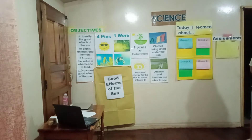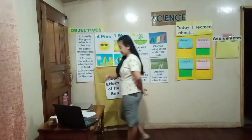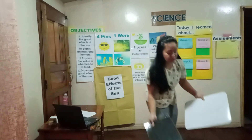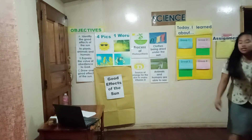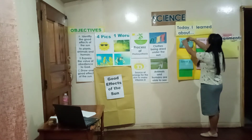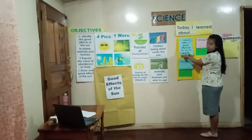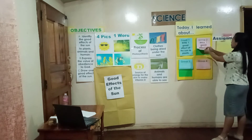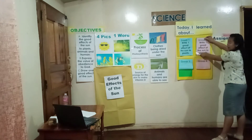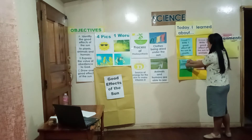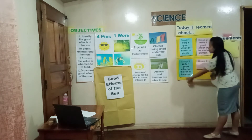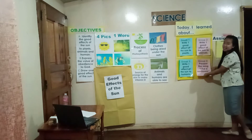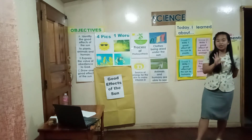So I'll be grouping you into four groups. Group one: write one good effect of the sun to plants. Group two: write one good effect of the sun to animals. Group three: write one good effect of the sun to humans. And group four: present the song 'Like a Sunflower.' I'll give you five minutes to finish the task.